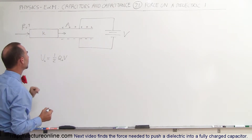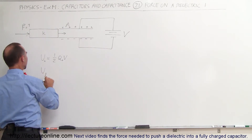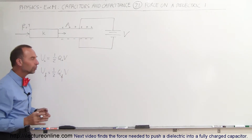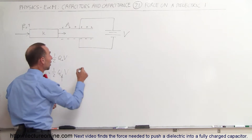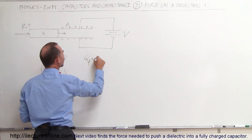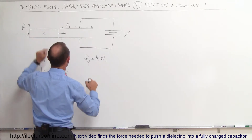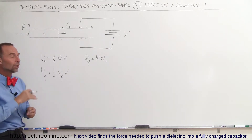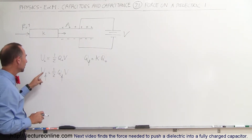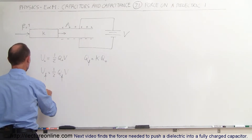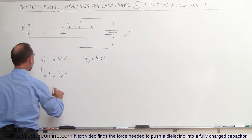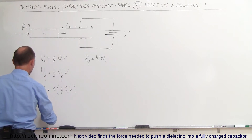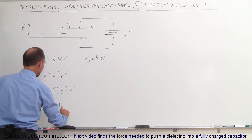So the initial energy is U₀. The final energy U final is equal to one-half times Q final times V. Now, Q final relative to Q initial: from a previous video, Q final equals K times Q initial, K being the dielectric constant. So if K is three, Q final will be three times Q initial. Therefore the energy will increase by a factor of K, and U final equals K times one-half Q initial times V, which is K times U initial.